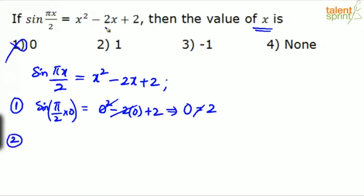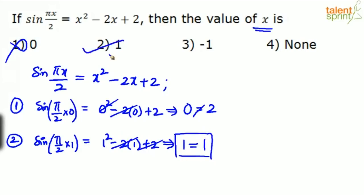Try with option 2. Substitute x equals 1. Sine of pi by 2 into 1 equals 1 squared minus 2 into 1 plus 2. Does it satisfy? Sine pi by 2 is sine 90. Sine 90 is equal to 1. 1 is equal to... Look at this. Minus 2 and plus 2 gets cancelled. We are left with 1 squared, which is 1. Correct or not? Yes. So we can put option 2 is the answer. Very simple.